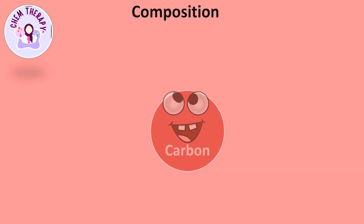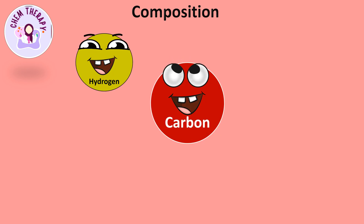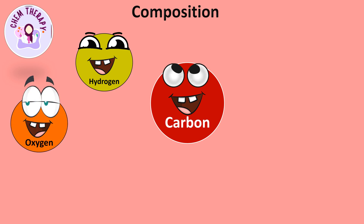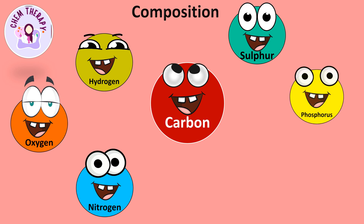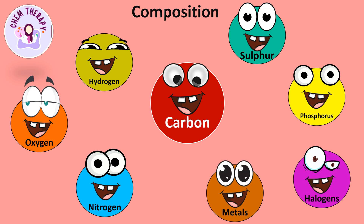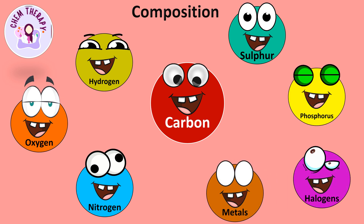Carbon is the main constituent of organic compounds. Hydrogen is also frequently present in organic compounds. Organic compounds also contain many other elements, like oxygen, nitrogen, sulfur, phosphorus, and halogens, occasionally. Metals are also present in few compounds, like chlorophyll and hemoglobin.